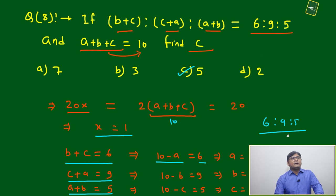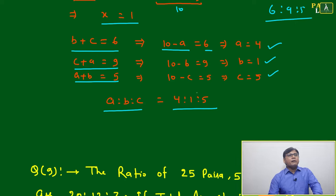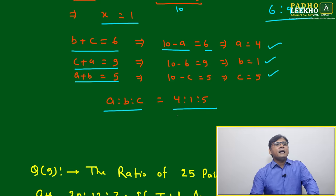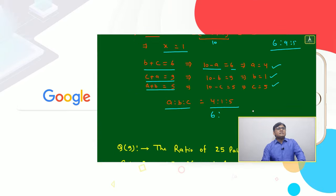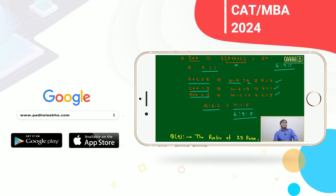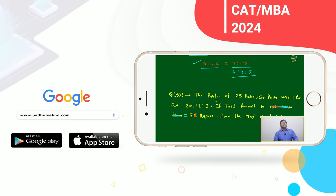If you take the original ratio, just compare (b+c), (c+a), (a+b). b+c becomes 6, c+a is 9, a+b is 5. This is your ratio: (b+c):(c+a):(a+b), and this is your ratio a:b:c.